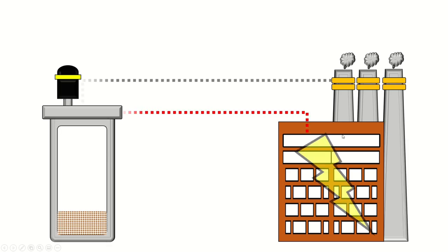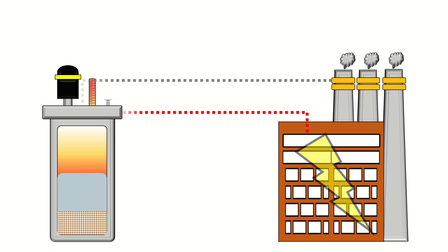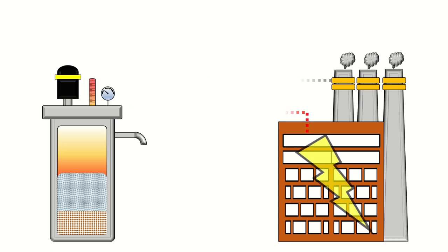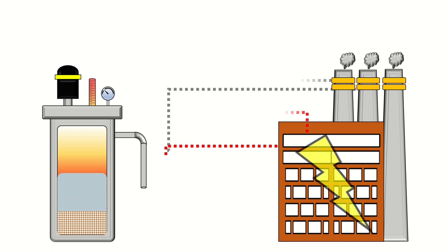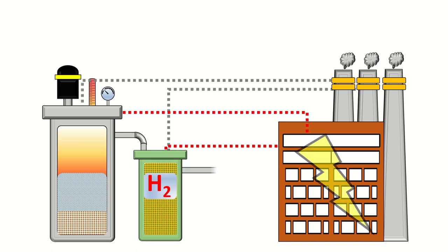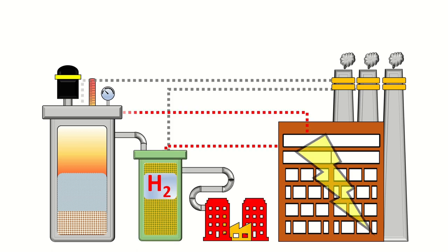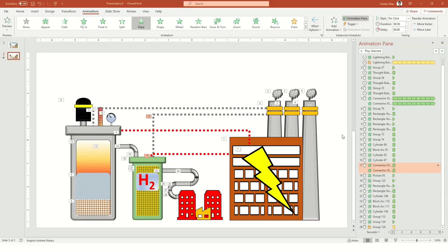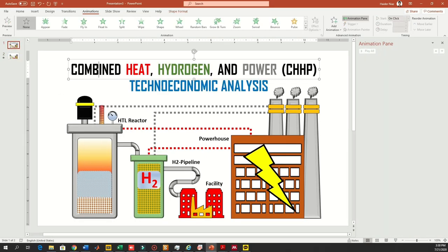This is how you make an animation from a graphic abstract. I showed you how to make a graphic abstract in my previous video, and you can apply this to any graphic abstract you want. I simply used two animations: the appear animation and the wipe animation — and you can see how much you can do with just those two.